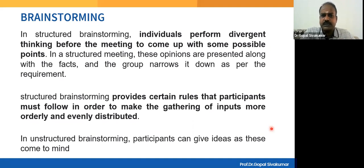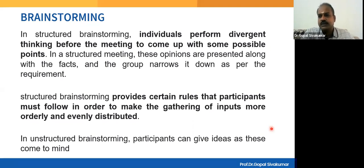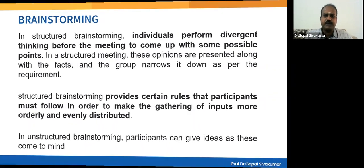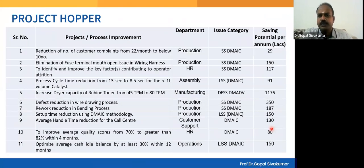Brainstorming can be structured by adding rules such as the duration and format of presentations, who should present, and in what order. When all those rules are applied, it is called structured brainstorming. Brainstorming can also be organized in an unstructured manner — without rules or guidelines, where anybody can talk in any order — but someone must carefully note down all the points about problems experienced by internal and external customers and business leaders. All of these can lead to a list of projects — the Project Hopper.